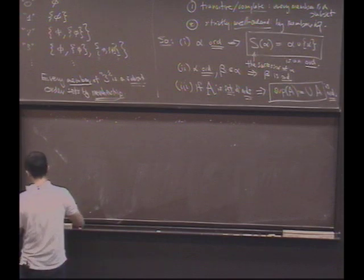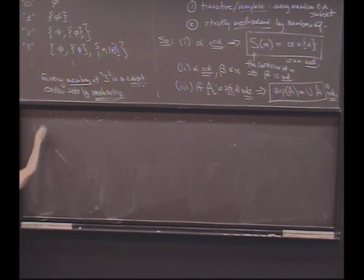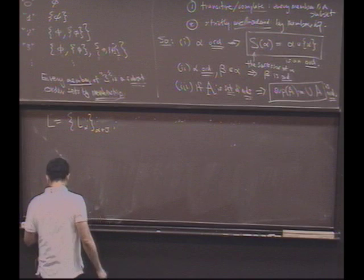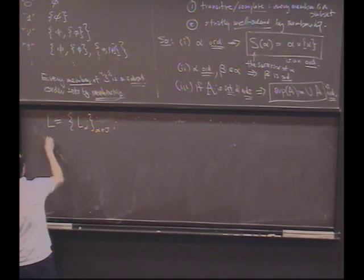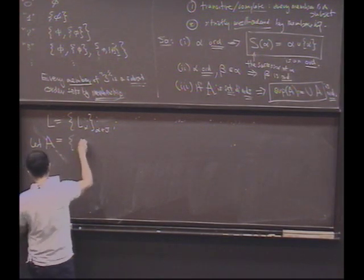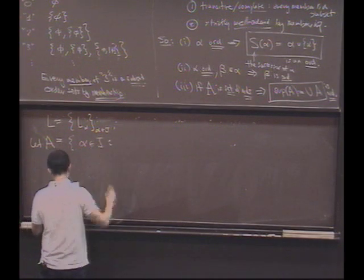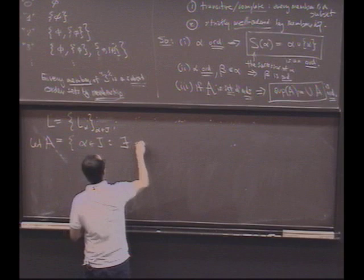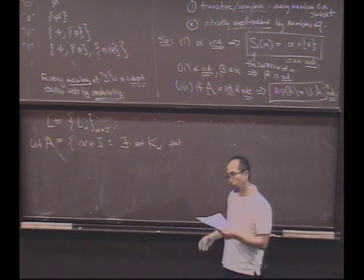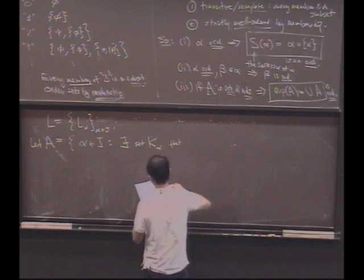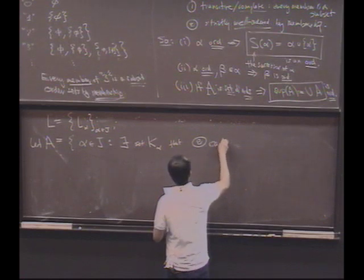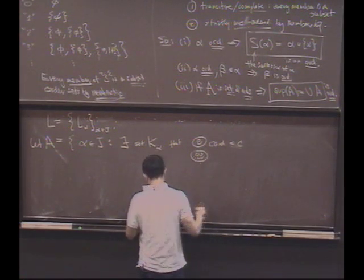Oh, okay. So here's what we're going to do then. If I well order it, then you can't stop me from writing L as L alpha for alpha in J. So now I'm going to let my set A, the set I'm going to try to show is inductive. I'll let it be the set of all alpha in J such that there exists a set K sub alpha that basically does what I want for the things up through alpha. So set K alpha will have property Cyclops Smiley. It'll have cardinality less than C.